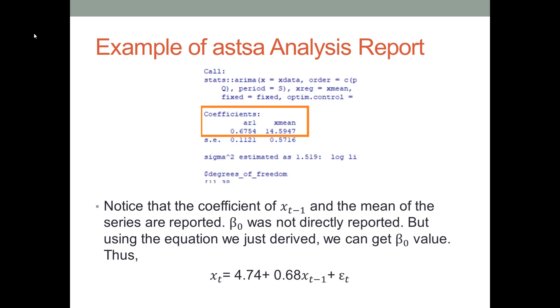But we don't have the intercept value. We don't have a value for β_0. Instead, the software reported a value under X mean, the mean of the time series dataset. It's 14.5947. Let's round it to 14.59. This is actually the value for μ in our model.